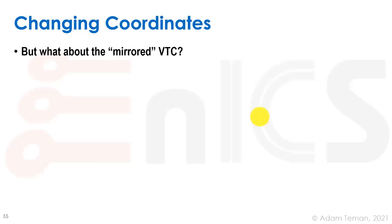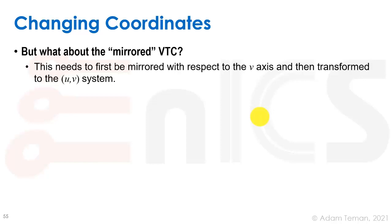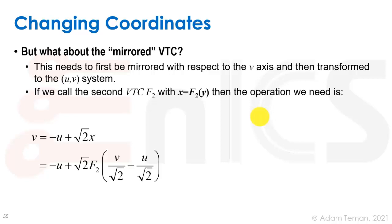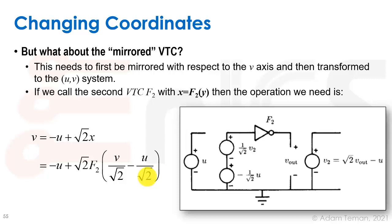What exactly is f1? It's the inverter that takes us from Q to Q-bar. For the mirrored VTC — which is Q-bar to Q — we need to mirror the VTC and flip it 90 degrees, then transform to the U-V system. Civek and Loestroh provide the math: v = −u + √2·f2(x), which gives v₂ = √2·f2((v/√2) − (u/√2)). We can draw that transformation circuit too, with voltage-controlled voltage sources providing this functionality.